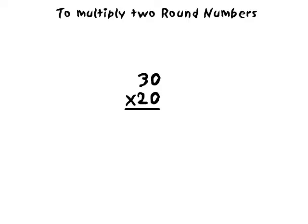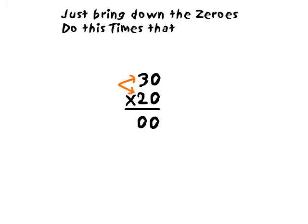To multiply two round numbers is all you got to do. Just bring down the zeros, do this times that, write down the answer on the left and you're through.